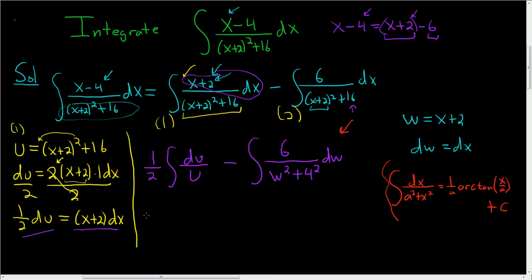So finally, integrating this gives us (1/2)ln|u| minus, the 6 hangs out, so it's 6 times, and then it's 1/a, so a is 4, so (1/4)arctan of w/a, so w/4 plus our constant C.